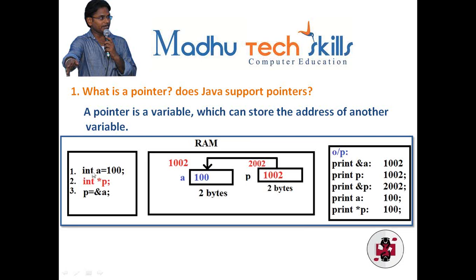I've given a small example here. When the first statement is executed, for variable `a`, two bytes of memory will be allocated. In that block I am storing the value 100, and this block has an address called 1002. When the second statement is executed — a pointer variable in C or C++ — using the star symbol we can declare a pointer variable. When that statement is executed, for `p` also two bytes of memory will be allocated, and in the third statement I am storing the address of `a` using the ampersand symbol.